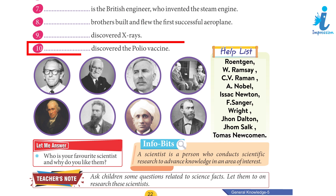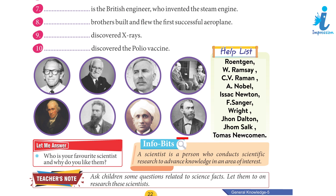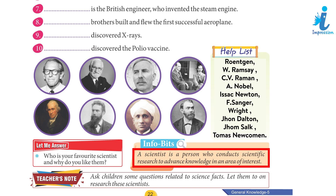10. Jonas Salk discovered the polio vaccine. Let me answer: Who is your favourite scientist and why do you like them? Info bits: A scientist is a person who conducts scientific research to advance knowledge in an area of interest.